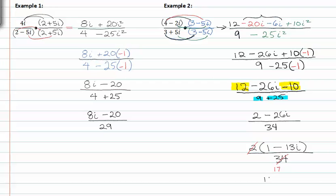Our final fraction should look like this, one minus thirteen i all over seventeen. And now it's reduced to its lowest term.